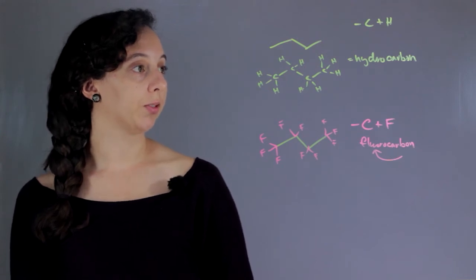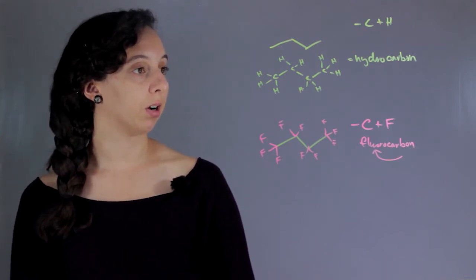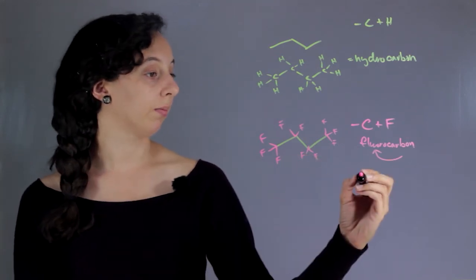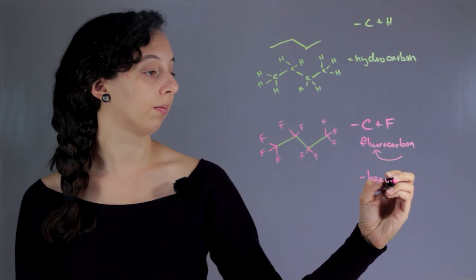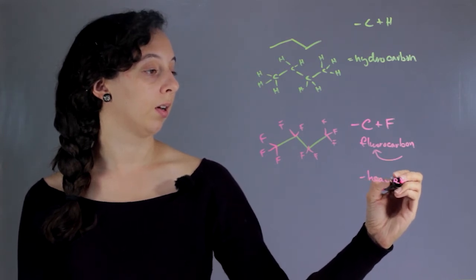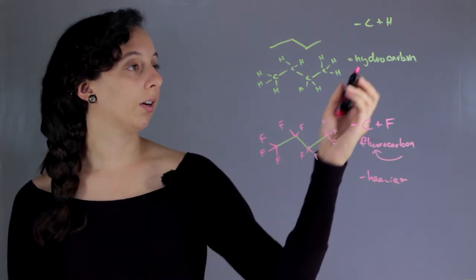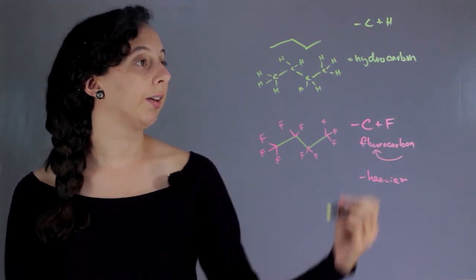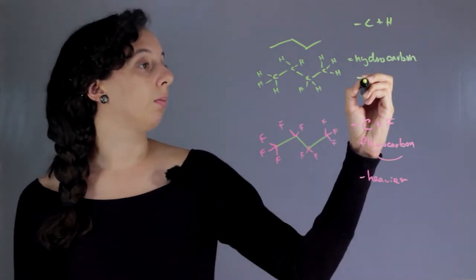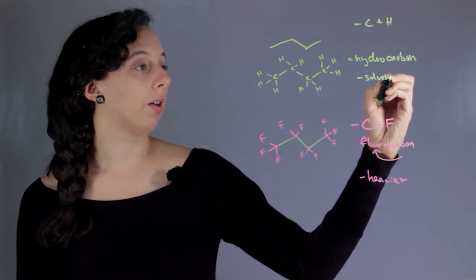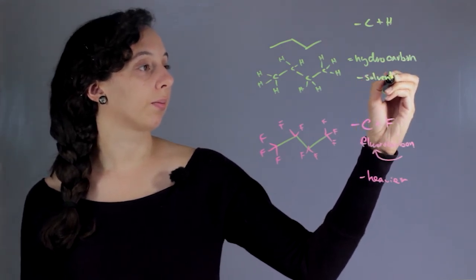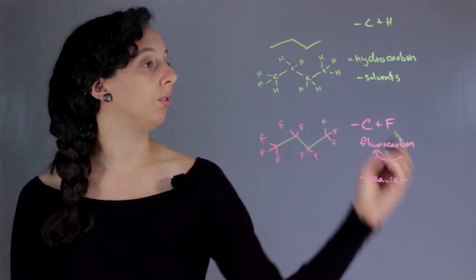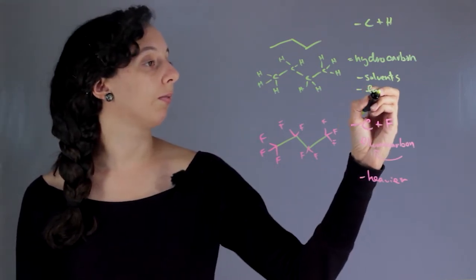What are some differences between hydrocarbons and fluorocarbons? Well, because of the fluorines, these are much heavier. Hydrocarbons are very common and can be used for a variety of things. They can be used as solvents — things that dissolve other chemicals — or as basic oils, and sometimes they can be used as fuel if you break them down.